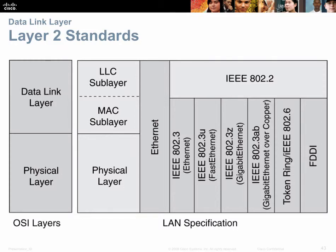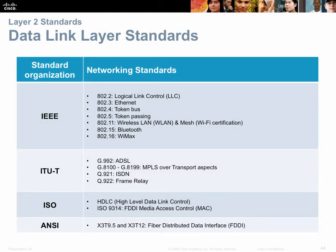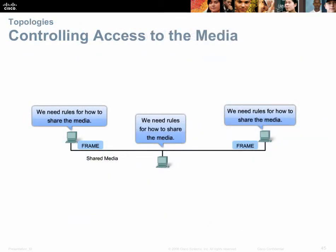Looking at IEEE standards across the OSI layers, the IEEE standards function from layer one up through the lower half of layer two. Then 802.2 covers the upper half — the LLC sub-layer of layer two — which is the driver software for our NIC, transferring physical information into software for the operating system. The same standards organizations involved at layer one are essentially involved at layer two.